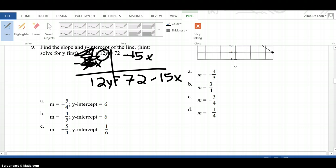And now I have 12y equals 72 minus 15x, which is good. But I need to have just y, not 12y. So in order to get rid of that 12 I need to divide by 12. Twelve divided by 12 is 1, so I have y. Seventy-two divided by 12 is 6, minus 15 over 12, which is the same thing as 5 over 4x.